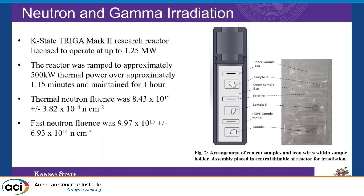Our K-State Triga research reactor facility was used to irradiate the cement-based samples. The cement-based samples and iron wires were placed in LDPE bags and heat sealed, then placed in an HDPE sample holder as shown in the figure. The entire assembly was placed in the central thimble of the reactor. The reactor was ramped up to 500 kilowatts in approximately 1.15 minutes and maintained at that power for one hour. The iron wires placed between the cement-based samples were used to estimate the variation of neutron flux and to determine the neutron fluence as well as the gamma dose by analyzing the activation of the iron wires.